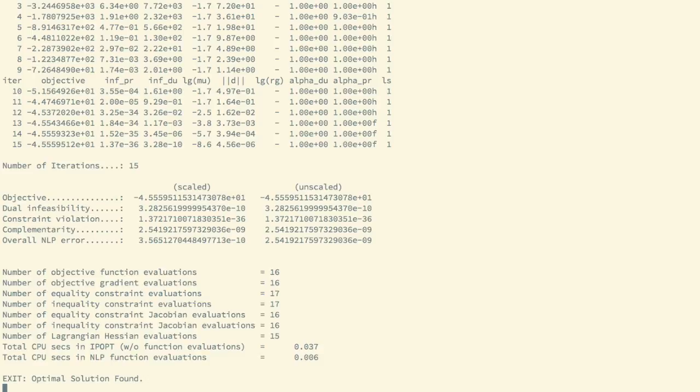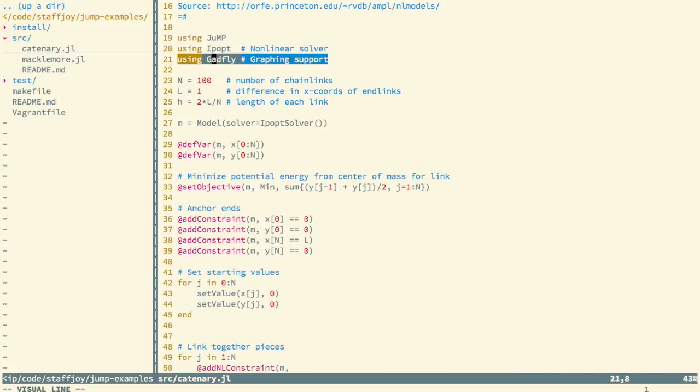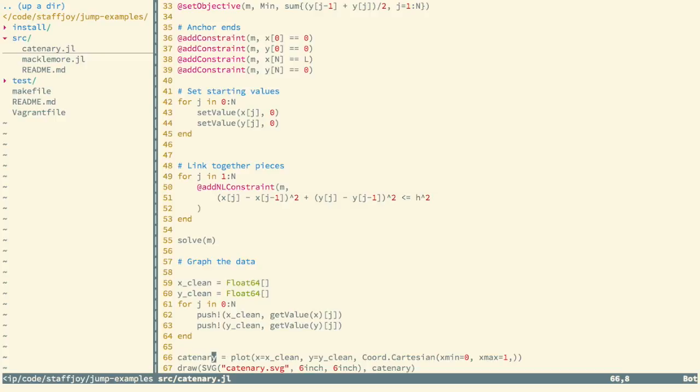We get the optimal solution. Right now it's generating our graph. Basically right down here, I use the library that I imported up top, which is Gadfly. We're basically creating an SVG of the X and Y values.